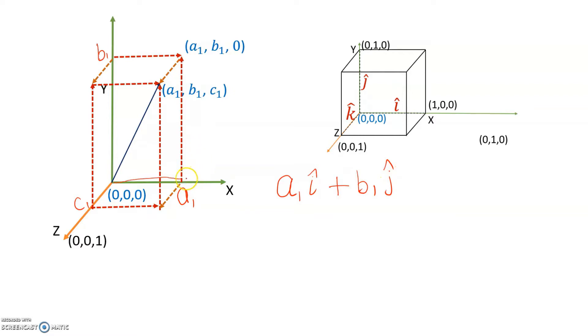Then I'm going to add this to b1 j-cap. So when I say b1 j-cap it's something that runs in this direction, runs along this line upward. So we came in this direction and now we have climbed up the ladder in this direction. So we've reached from 0 to a1 i-cap then we've gone up to b1 j-cap.